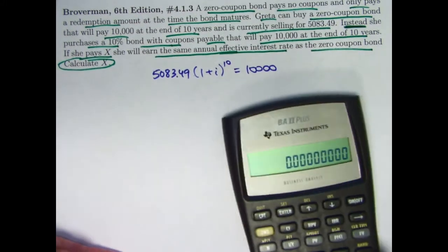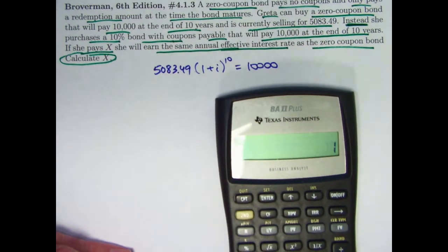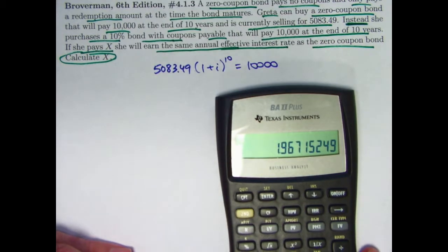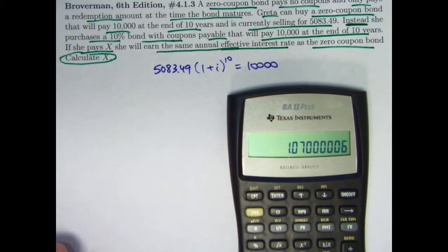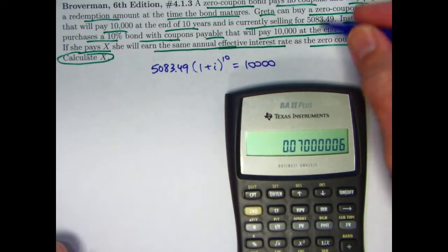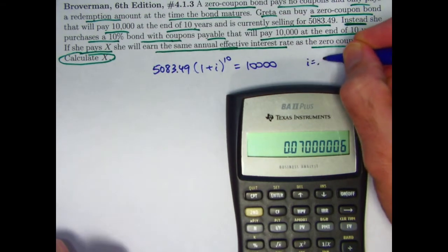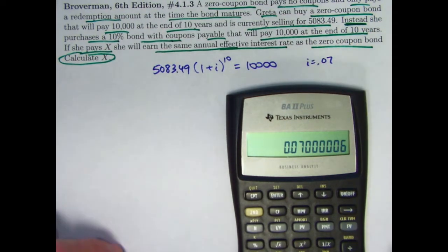And we can now solve that equation for I. Take $10,000, divide by $5,083.49. 1 plus I to the tenth equals this. I should raise both sides to the one-tenth power, 0.1, to get this, and subtract one to get I. I is very, very close to 7%. Let's go ahead and round it to 7%.